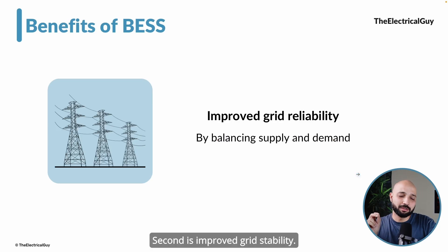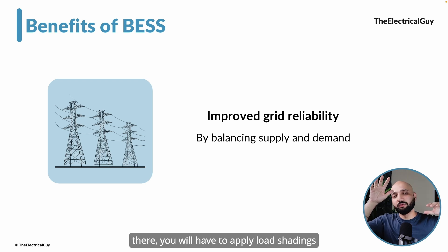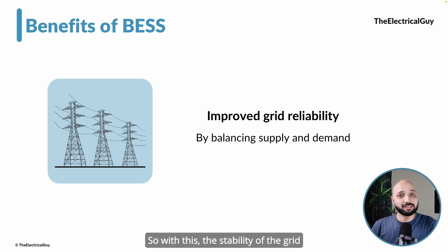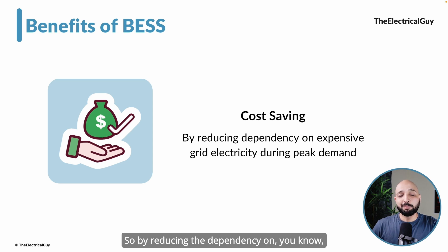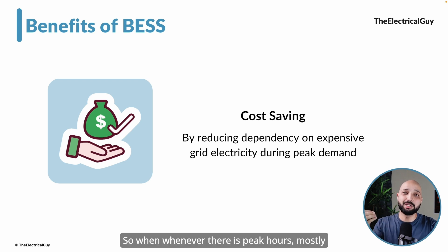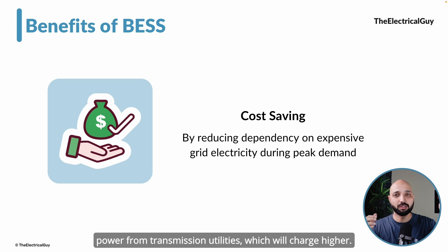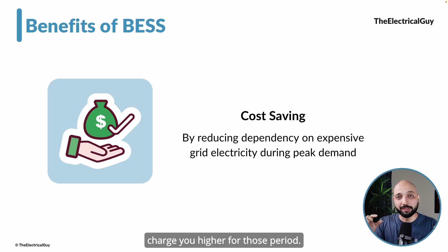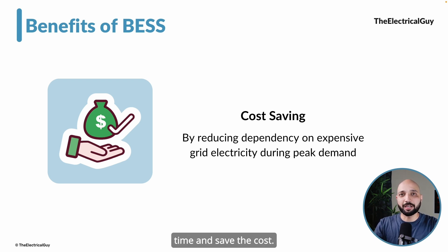The second benefit is improved grid stability. When supply and demand are well-managed, the grid is stabilized. When demand rises and supply is not there, load shedding occurs and the grid becomes unstable — BESS helps prevent that. Third is cost saving. During peak hours, typically in the evening, electricity companies charge more. With a battery energy storage system, we can discharge our batteries during these periods and save on electricity costs.